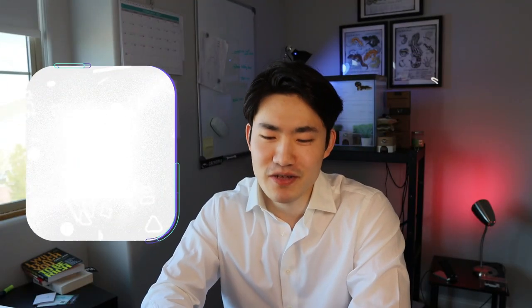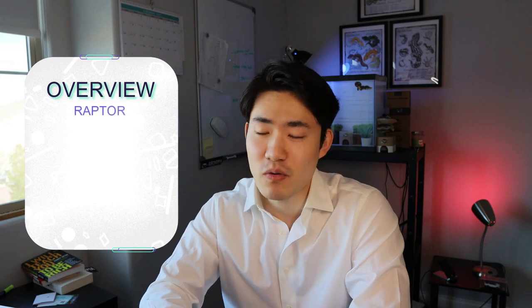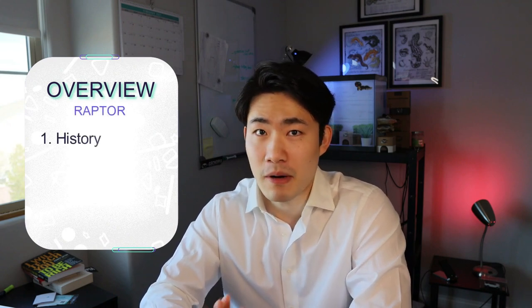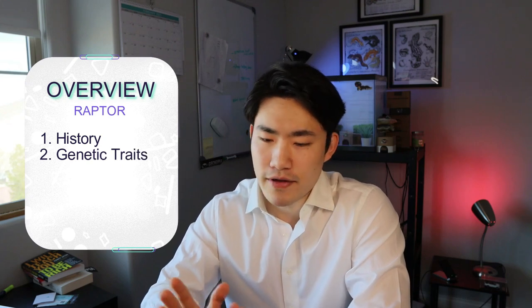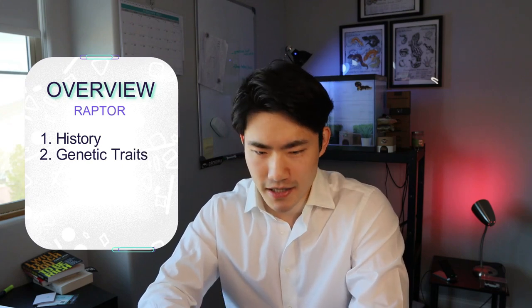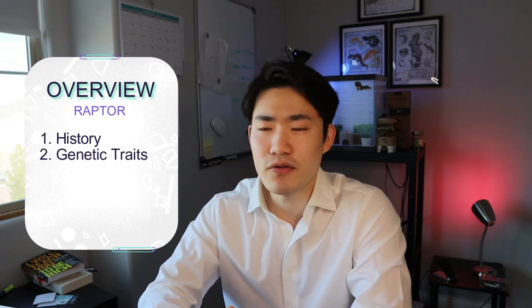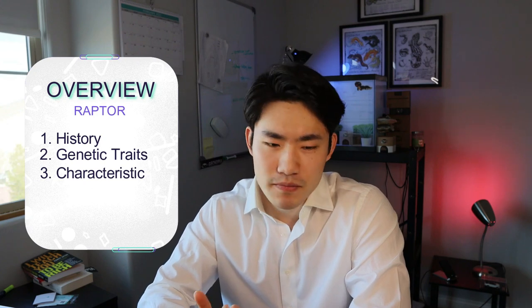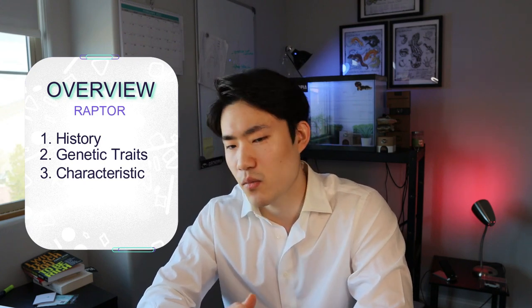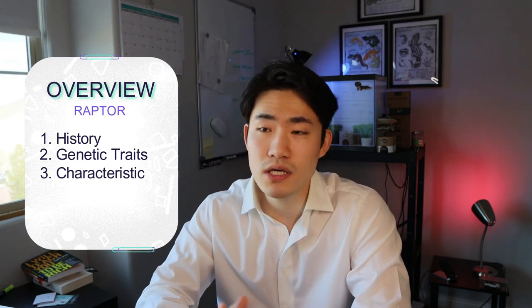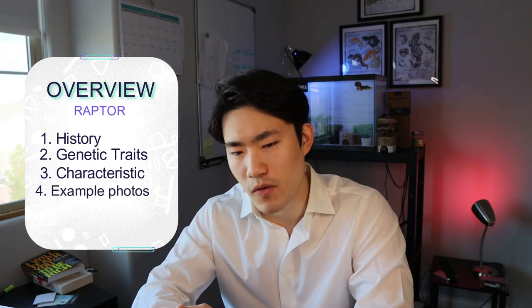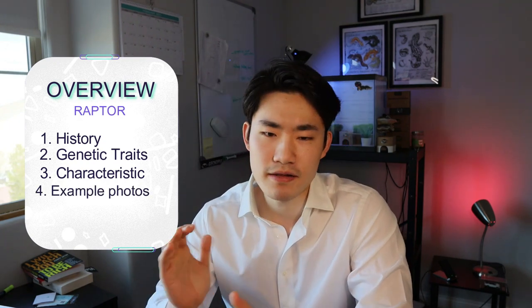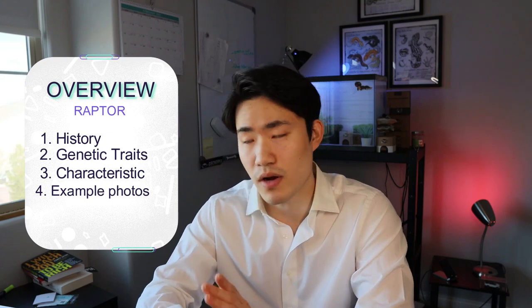For those who've been watching my videos, you'll understand what I'm going to be covering. Number one is the history background about the Raptor. Second will be the genetic traits — whether they're polygenic, recessive, codominant, dominant, and all these things. Third, I'm going to be sharing the characteristic side of how they look visually. And fourth, it will be the example photos — basically Raptor photos and some combinations with Raptors.